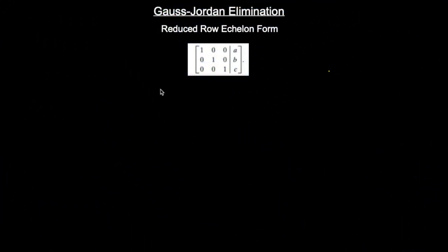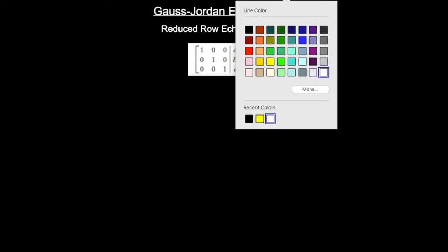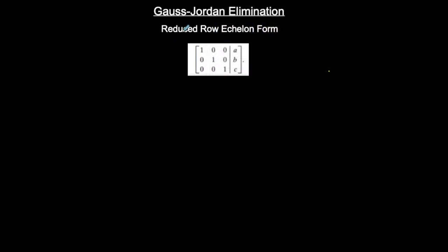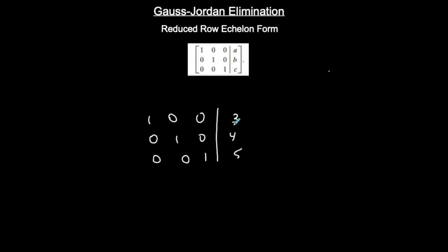Now we're going to look at Gauss-Jordan elimination and convert a matrix into reduced row echelon form, which not only has zeros on the bottom or the lower triangle, but also has zeros on the upper triangle and ones down the diagonal of my coefficient matrix. So that's the goal, and we use our row operations to get to that.